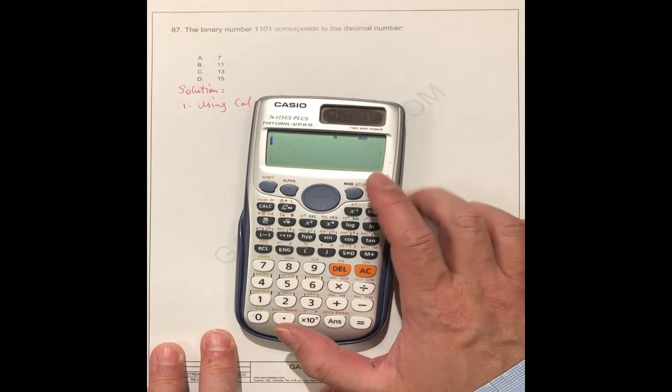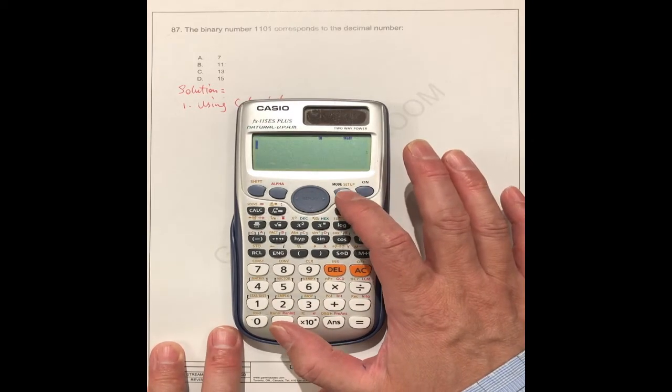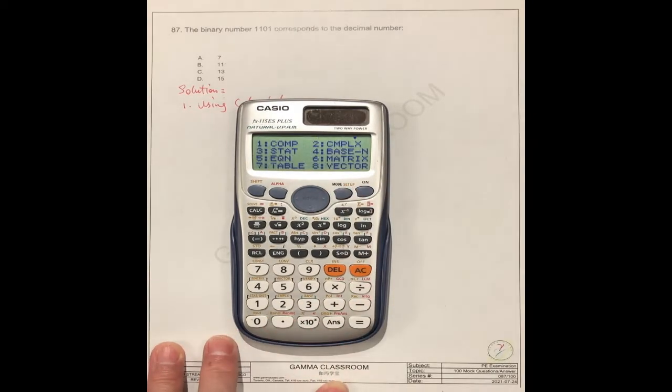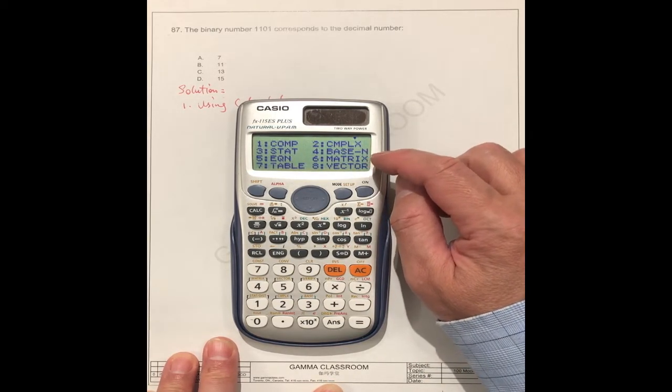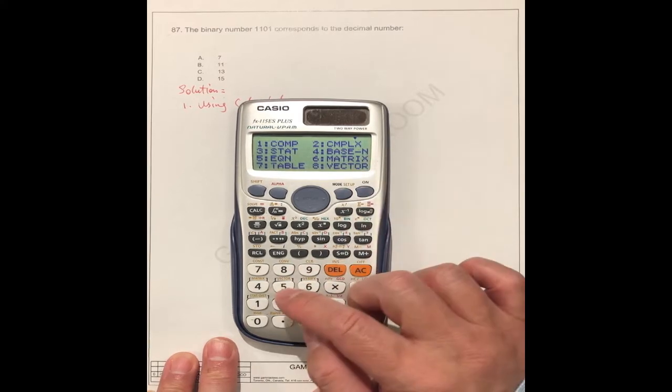The first one, you should choose the mode here. The mode plus the mode. You see, number 4 is the base n. You choose 4.